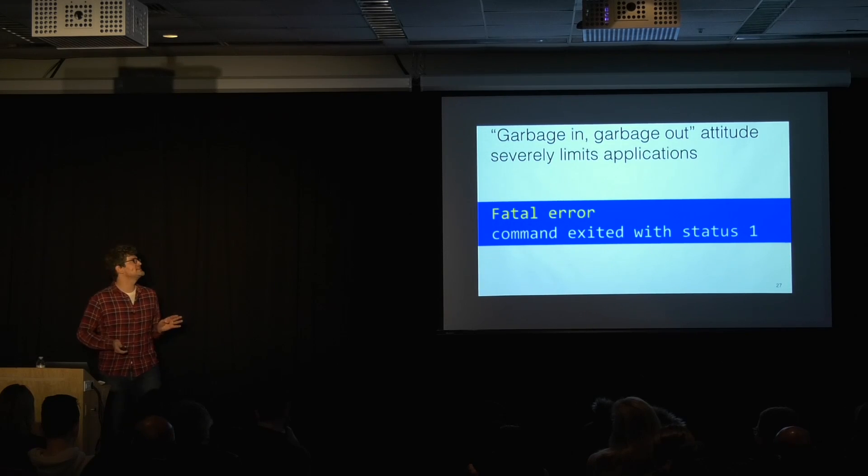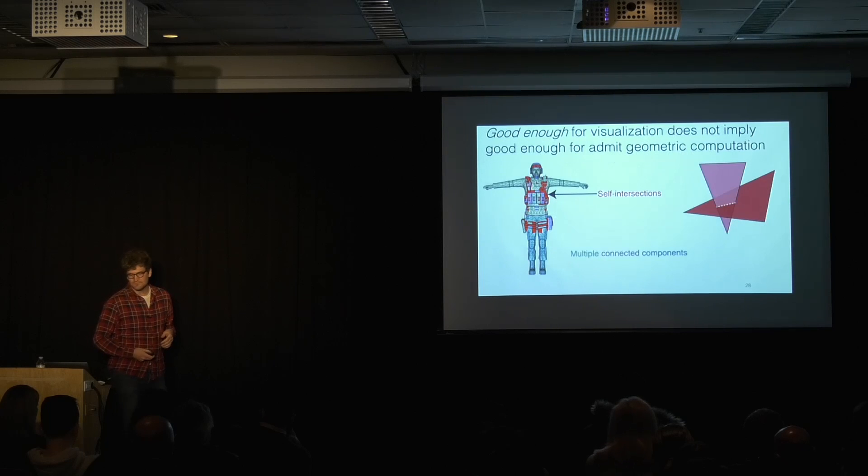My attitude is completely different. My attitude is that we should design our algorithms to gracefully degrade when they have problems. A core issue with geometric data is that we can easily create things that look good enough to us, but aren't good enough for geometric computation. So there's sort of a problem in the mismatch of things that are good enough for visualization are not good enough for geometric computation.